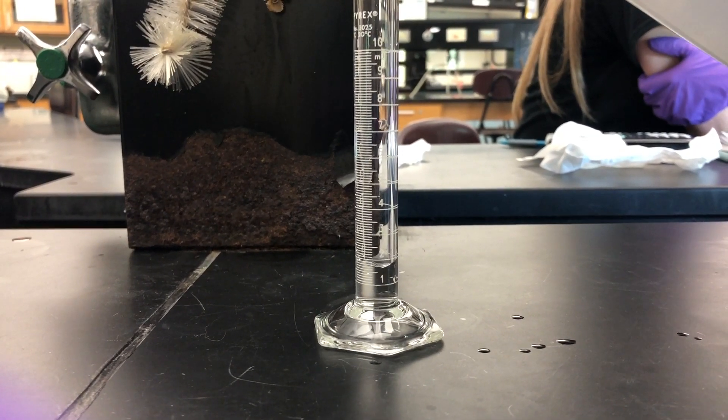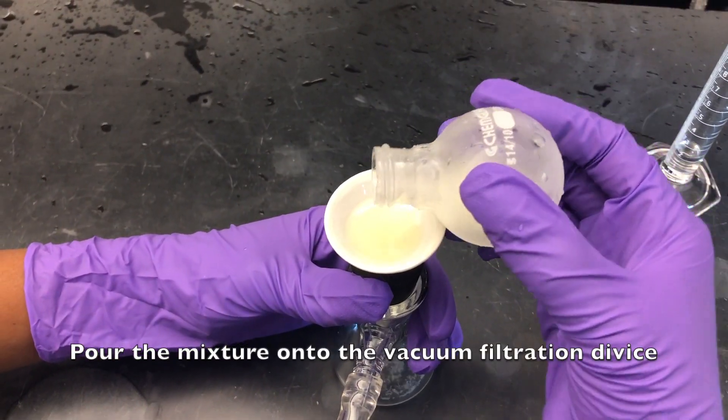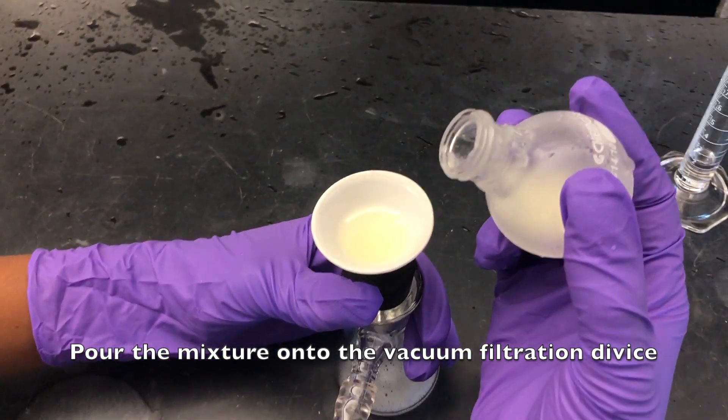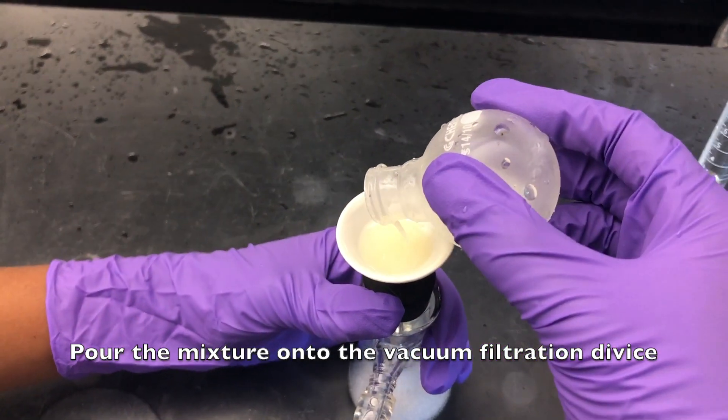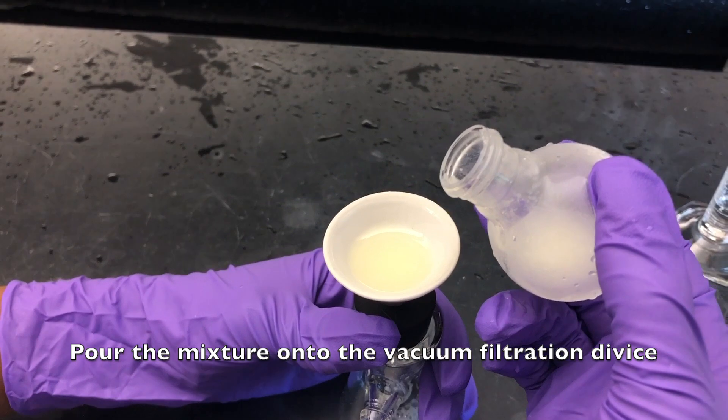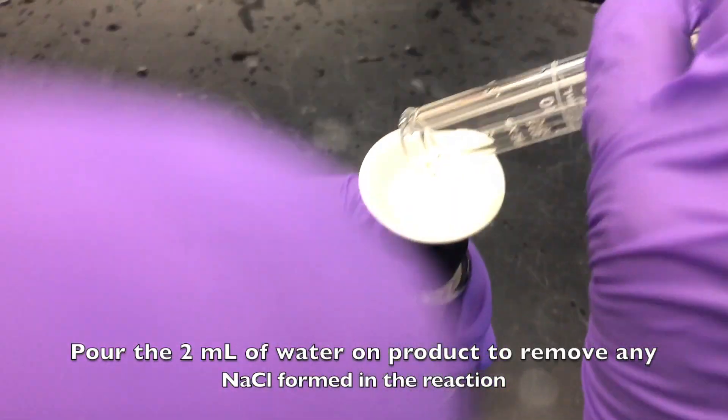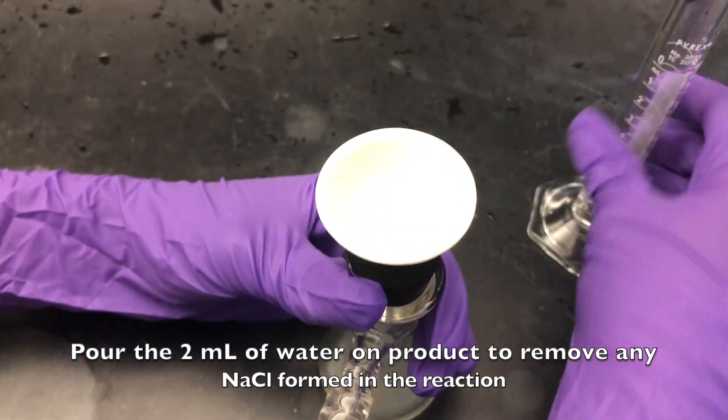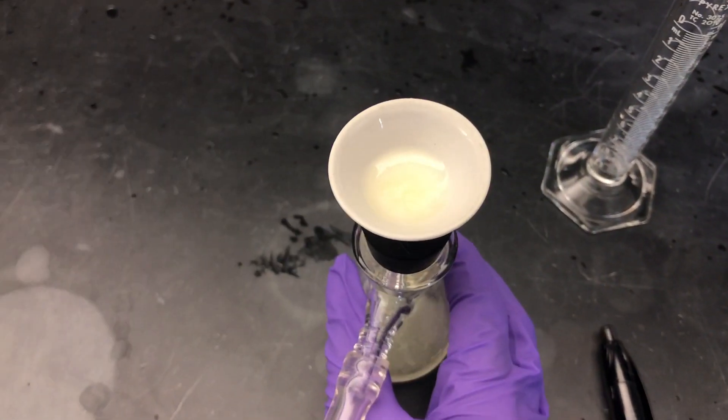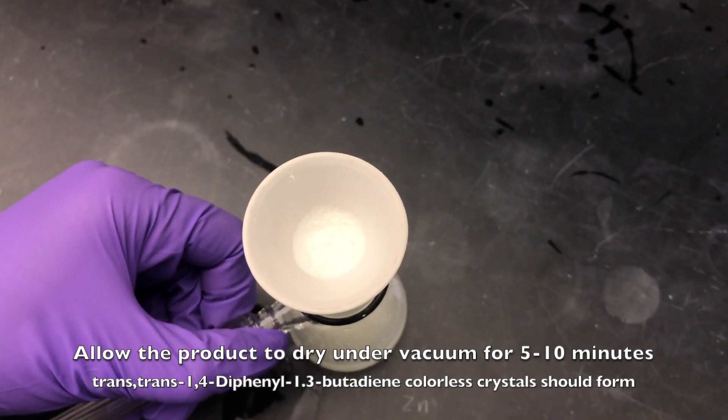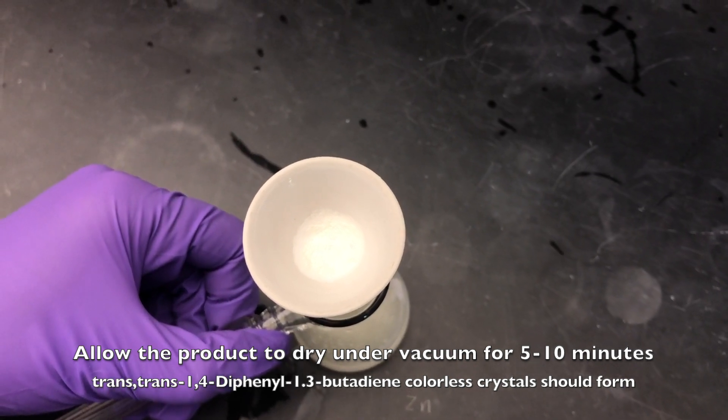Measure 2 milliliters of water for later use. Pour the mixture onto the vacuum filtration device. Pour the 2 milliliters of water on the product to remove any sodium chloride formed. Allow the product to dry under the vacuum for 5 to 10 minutes.